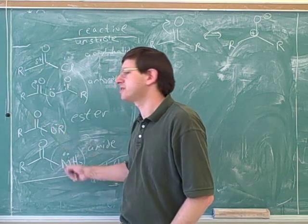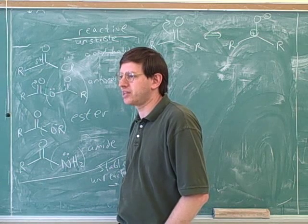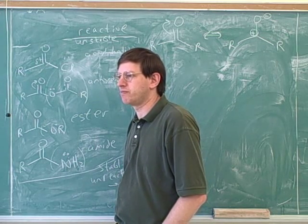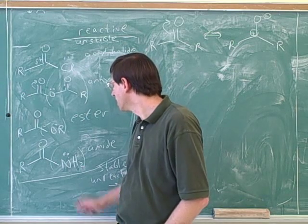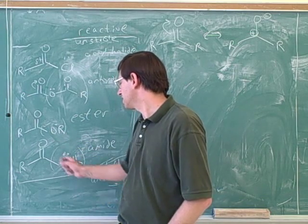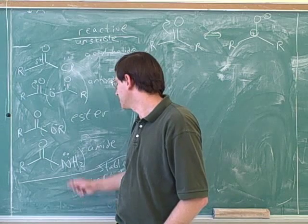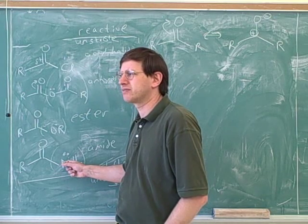Remember that when we're comparing two elements in the same row, the big difference is their electronegativity. When we're comparing two elements in the same row, the big difference is electronegativity. Both the nitrogen and the oxygen can donate electrons through resonance, but the nitrogen is going to be less eager to do that.